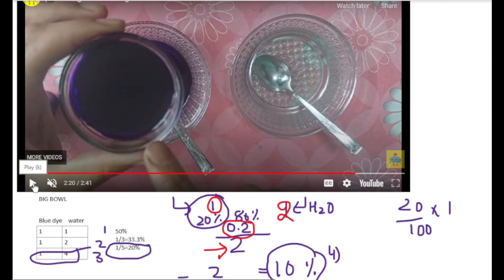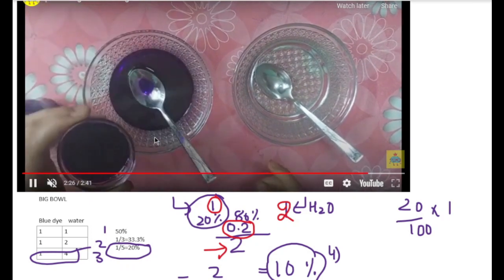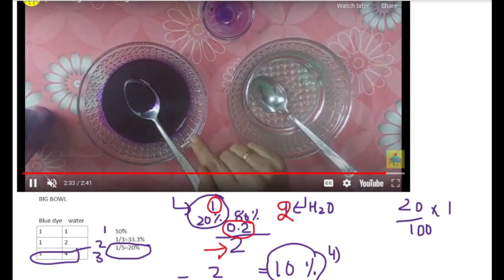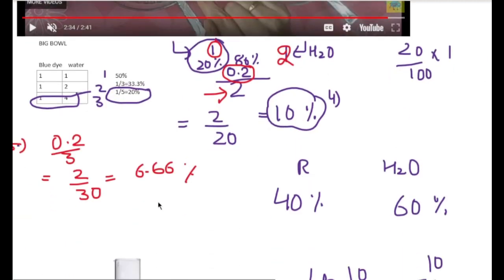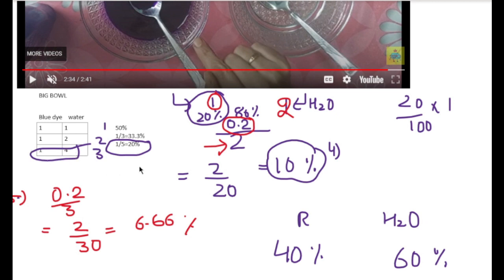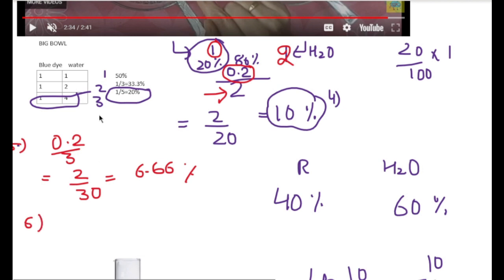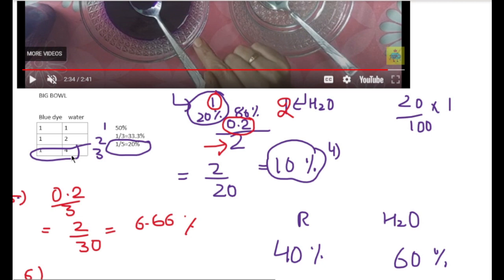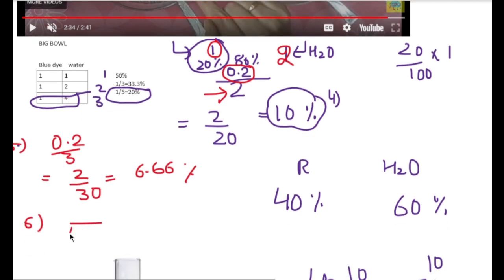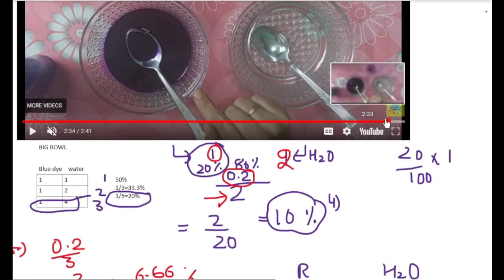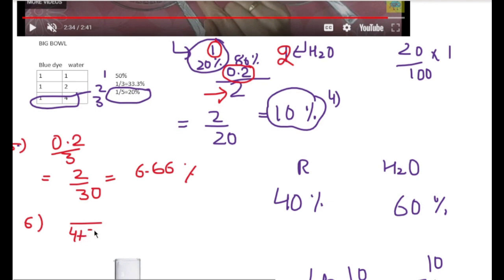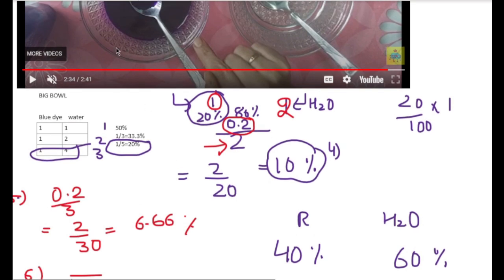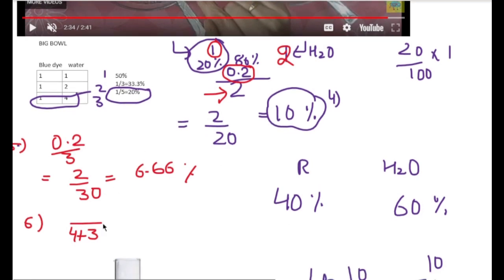In the next step, I pour the mini bowl back into the big bowl. We must know how much solution is in the big bowl. Originally there were 5 spoons in the big bowl, but one spoon was already taken out, so there are 4 spoons remaining. From the small bowl there were 3 spoons. So the total solution in the big bowl for this sixth question is 7 spoons. How much dye is in this?